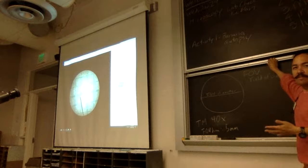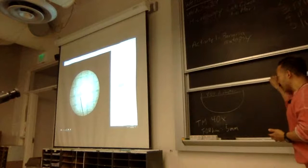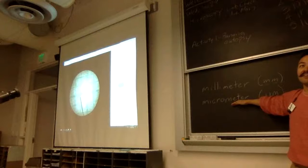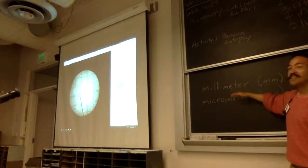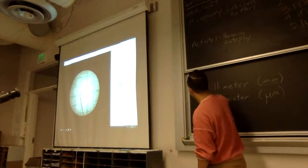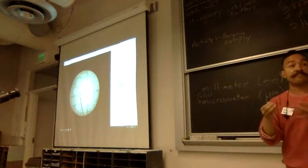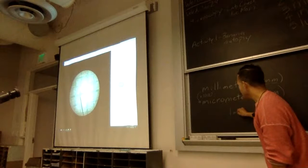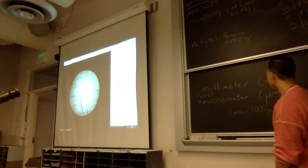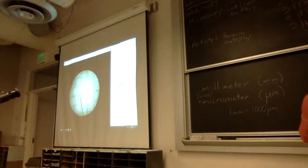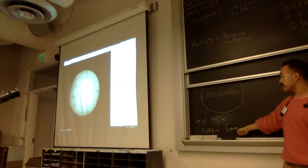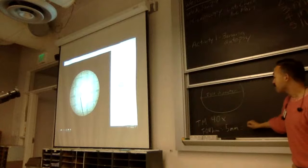What did I say I want the measurement to be in though — millimeters or micrometers? So if a millimeter is a thousandth of a meter and a micrometer is a millionth of a meter, to get from a millimeter to a micrometer it's a thousand times. Our conversion factor: one millimeter equals 1,000 micrometers. So if our field of view diameter at 40x is five millimeters, it's 5,000 micrometers.